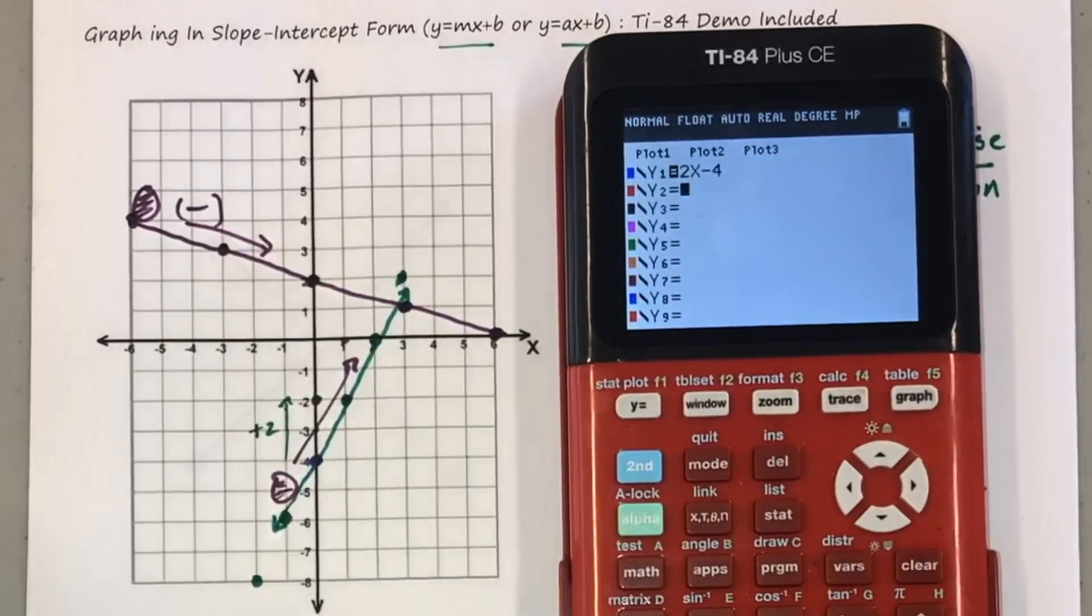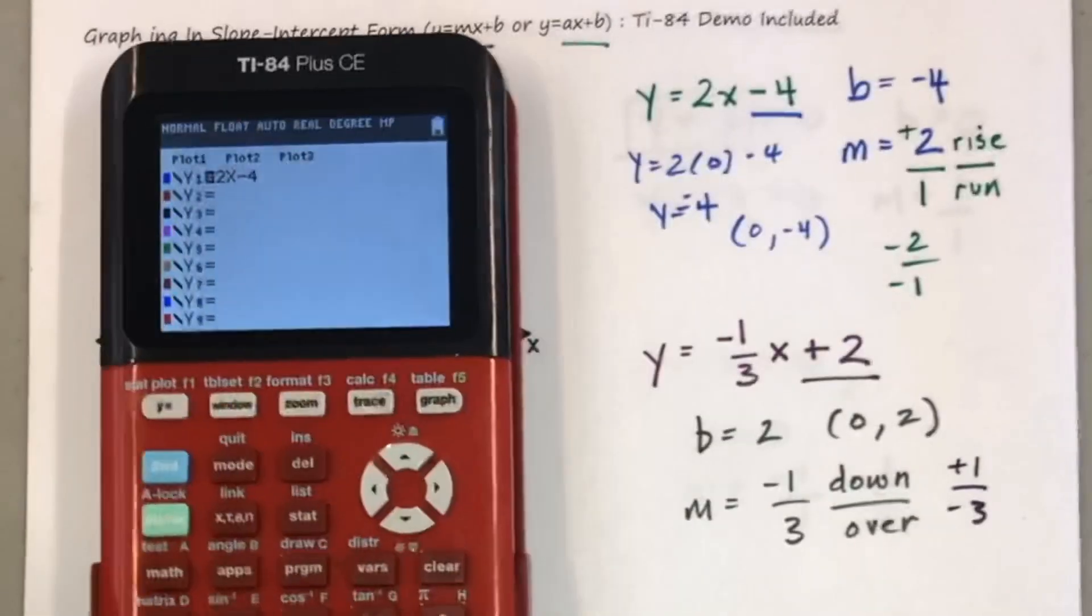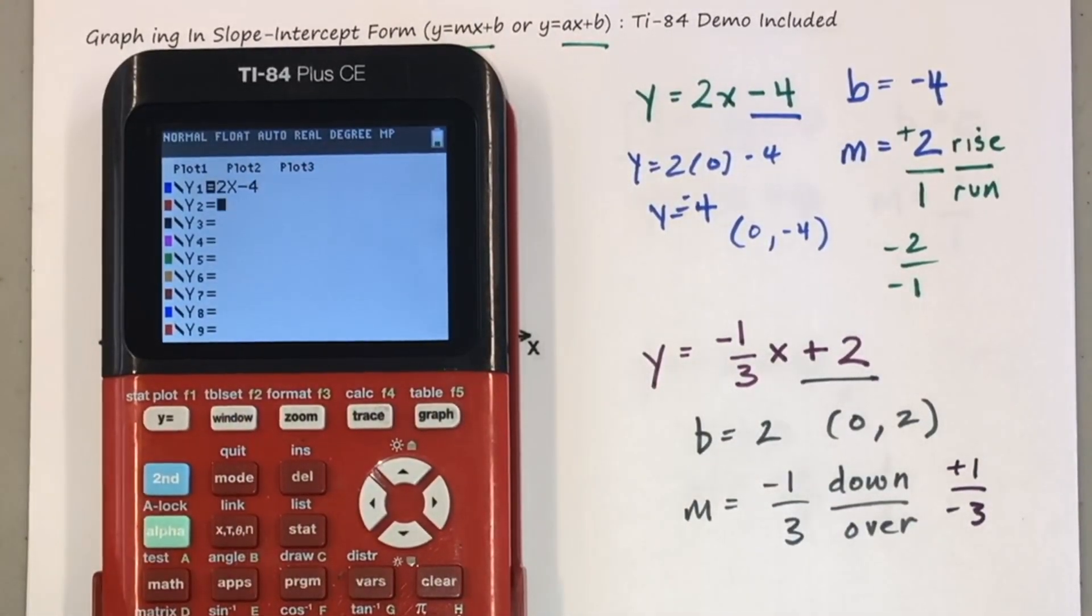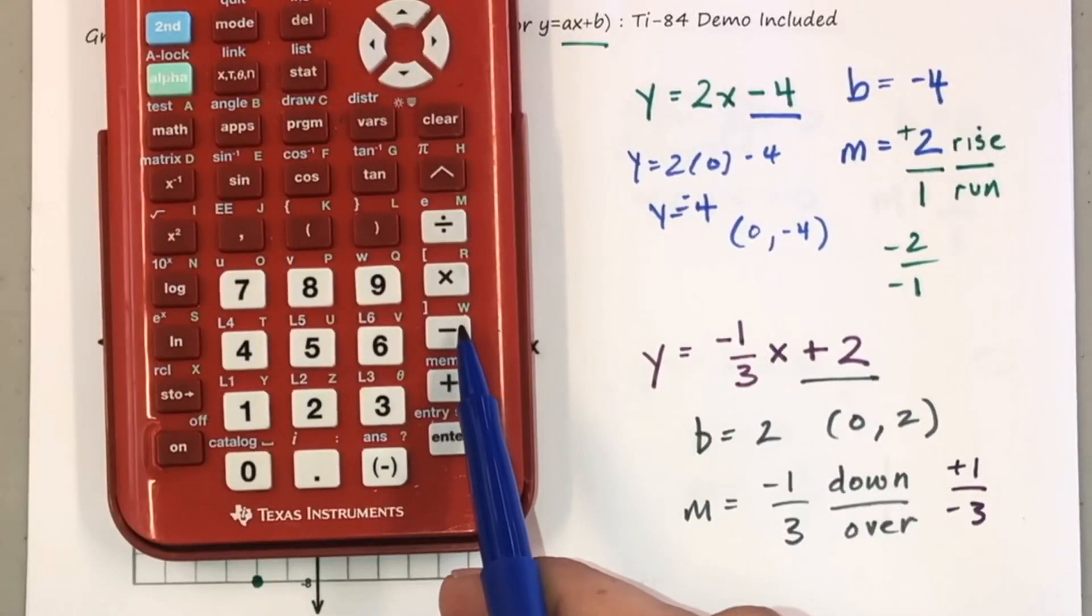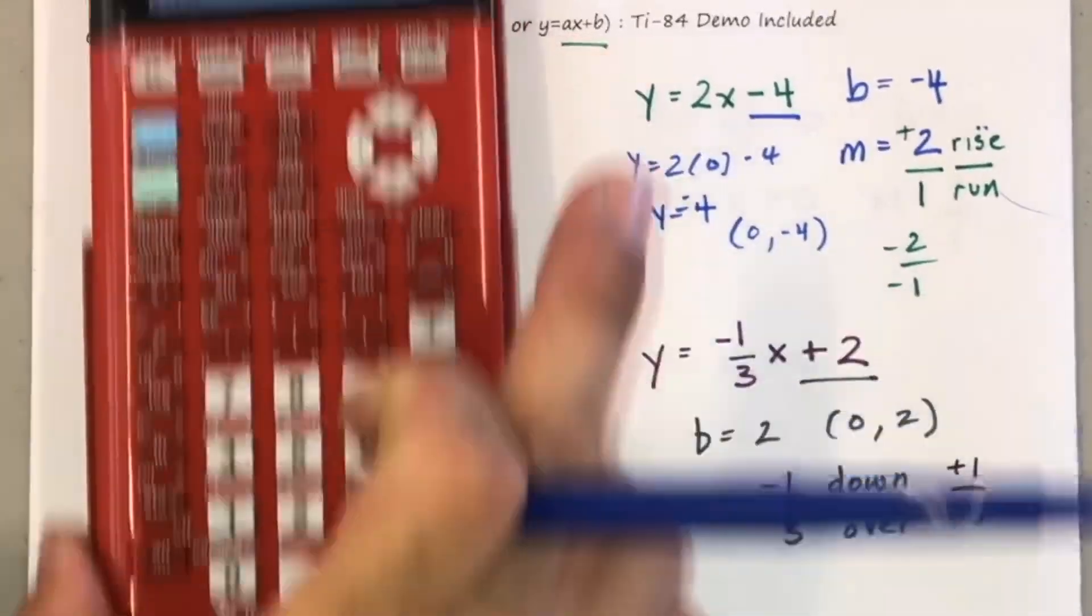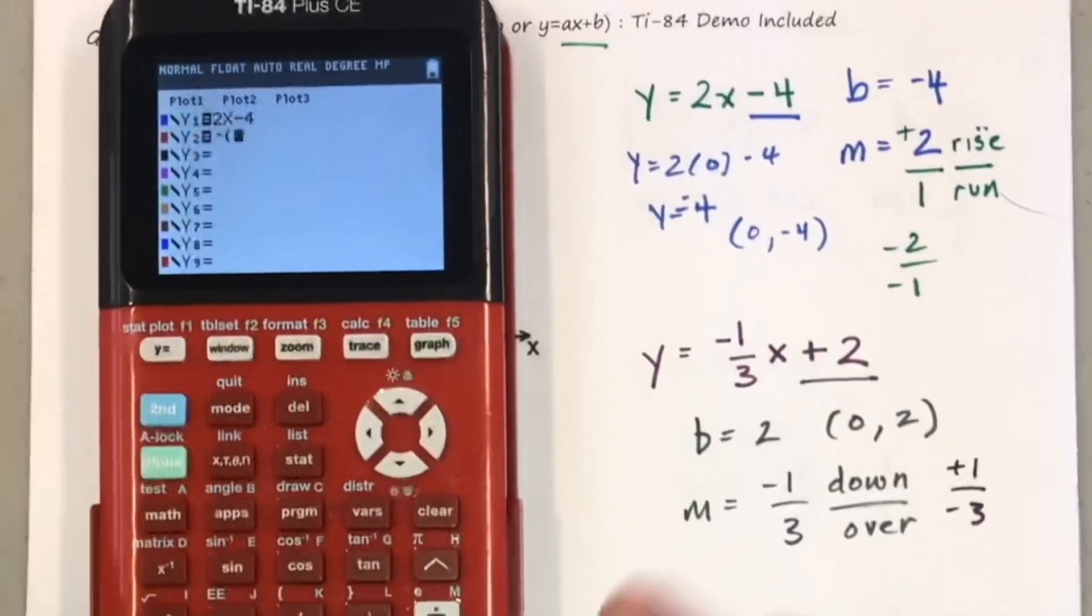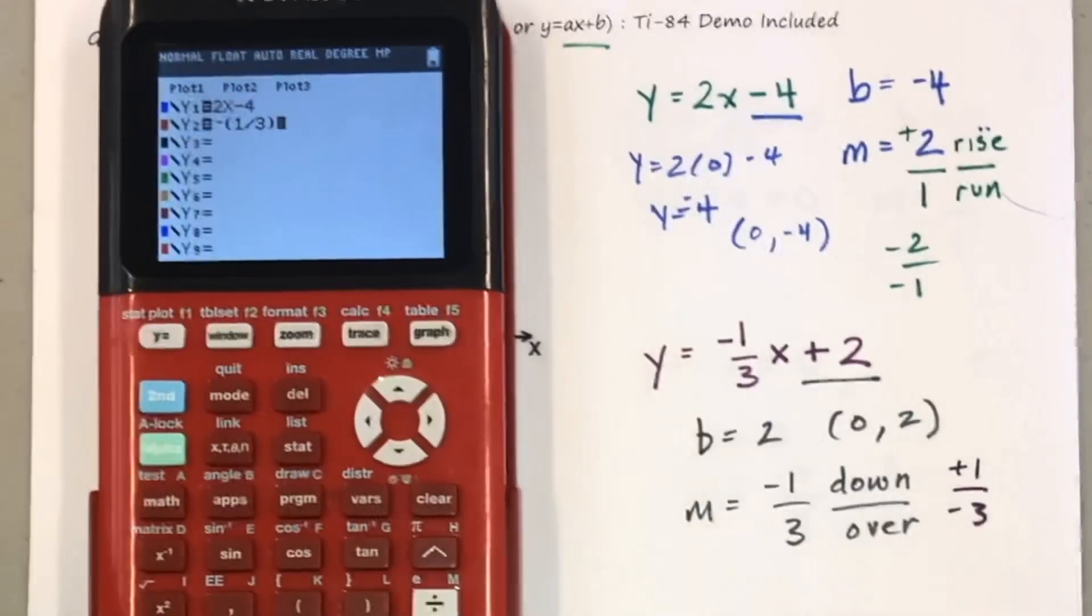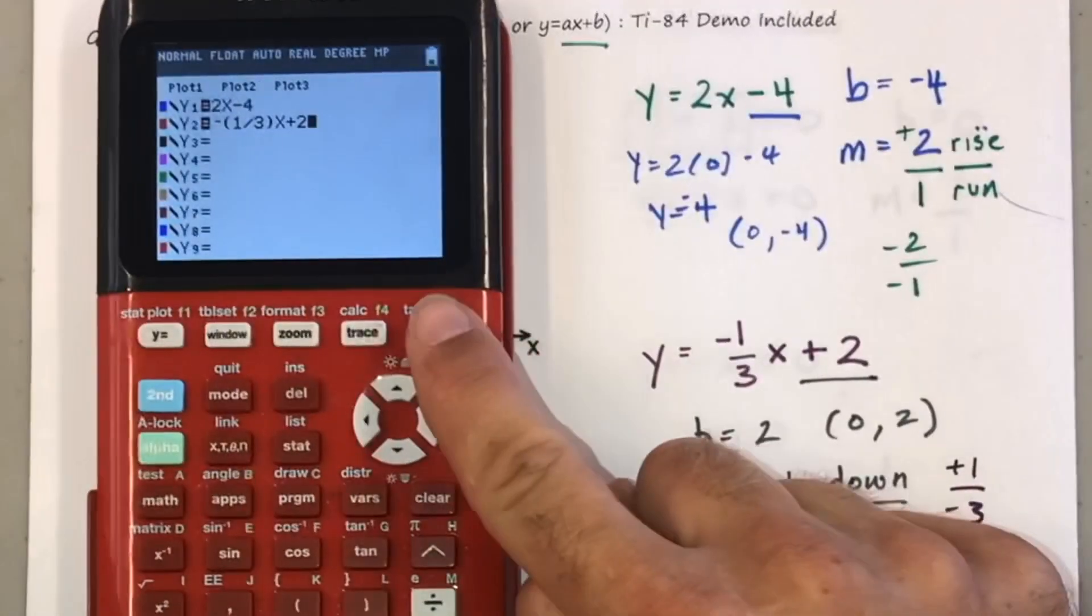Two x minus four. And then be careful when graphing a negative slope. There is a negative symbol at the bottom of your calculator. You have to use this instead of your negative or subtraction symbol in order to start your equation. So I'll put negative parentheses. Do I need to put parentheses? I will. Negative one third. I like to keep things neat there. X plus two. And then you're going to hit the graph button.